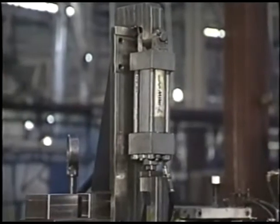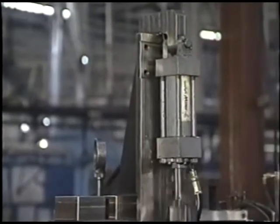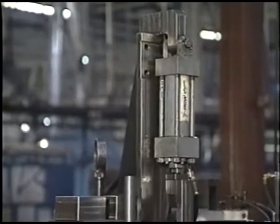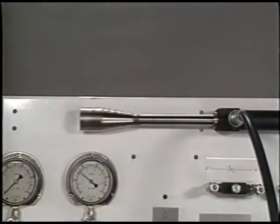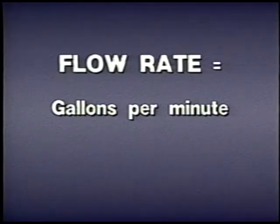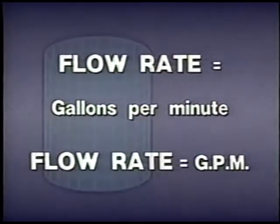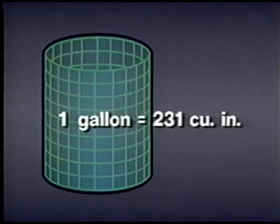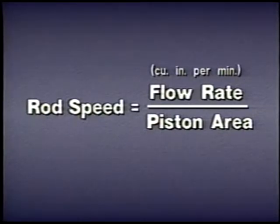The speed changes depending on how fast the cylinder fills up with fluid. If it fills up slowly, the rod moves slowly; if it fills up quickly, the rod moves quickly. How fast it fills up is called the flow rate, often measured in gallons per minute. Sometimes the flow rate is given in cubic inches per minute. You can convert to gallons per minute by dividing by 231 — the number of cubic inches in a gallon. The speed of the piston rod can be calculated by dividing the flow rate in cubic inches per minute by the area of the piston in square inches.